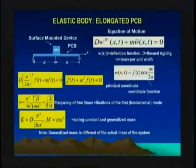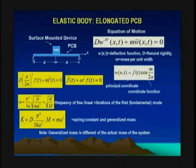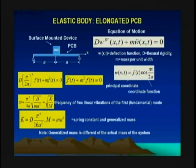Going back to this view graph, what you see on the top is an equation of motion of an elongated printed circuit board, and two terms are considered here. The first one is the elastic strain term — it's loading per unit length that is equivalent to the elastic behavior of the printed circuit board.